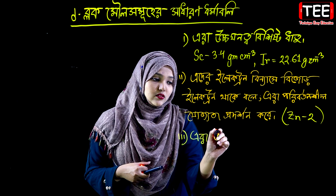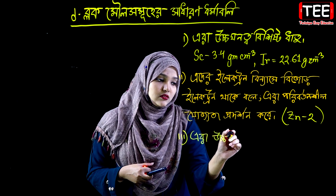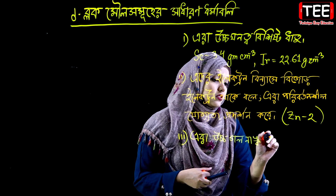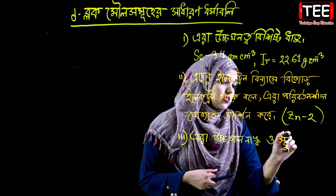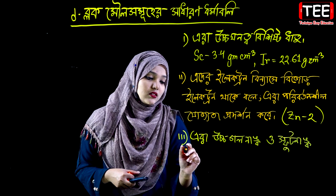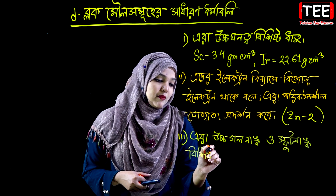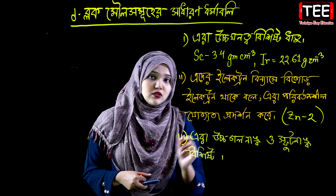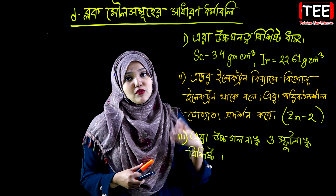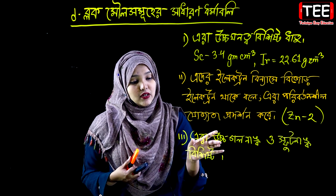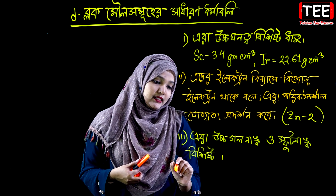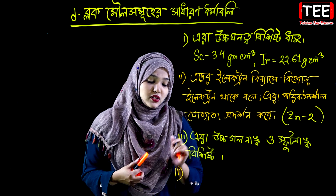D-block elements have high melting points and high boiling points. All metals in this block are solid metals. Because of their very high density, it takes much more energy and temperature to melt or vaporize them. They have high melting and boiling points.